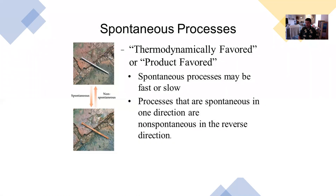It still can be fast or slow, so we're still not thinking about kinetics. And a process that is spontaneous in one direction is non-spontaneous in the opposite direction. So in our picture here, the nail spontaneously rusting — to remove that rust would be a non-spontaneous process.